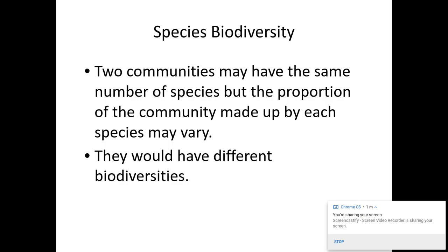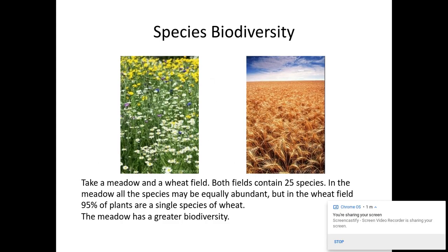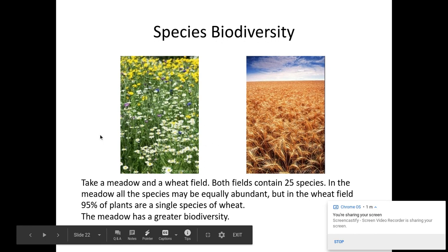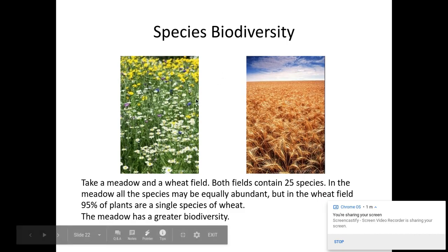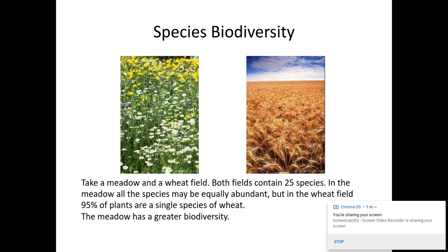Take these two habitats: a meadow and a wheat field. In both fields there are 25 species, so they have the same species richness. However, in the meadow each of those 25 species are equally abundant, so species evenness is relatively high because we have the same number of individuals of each species.